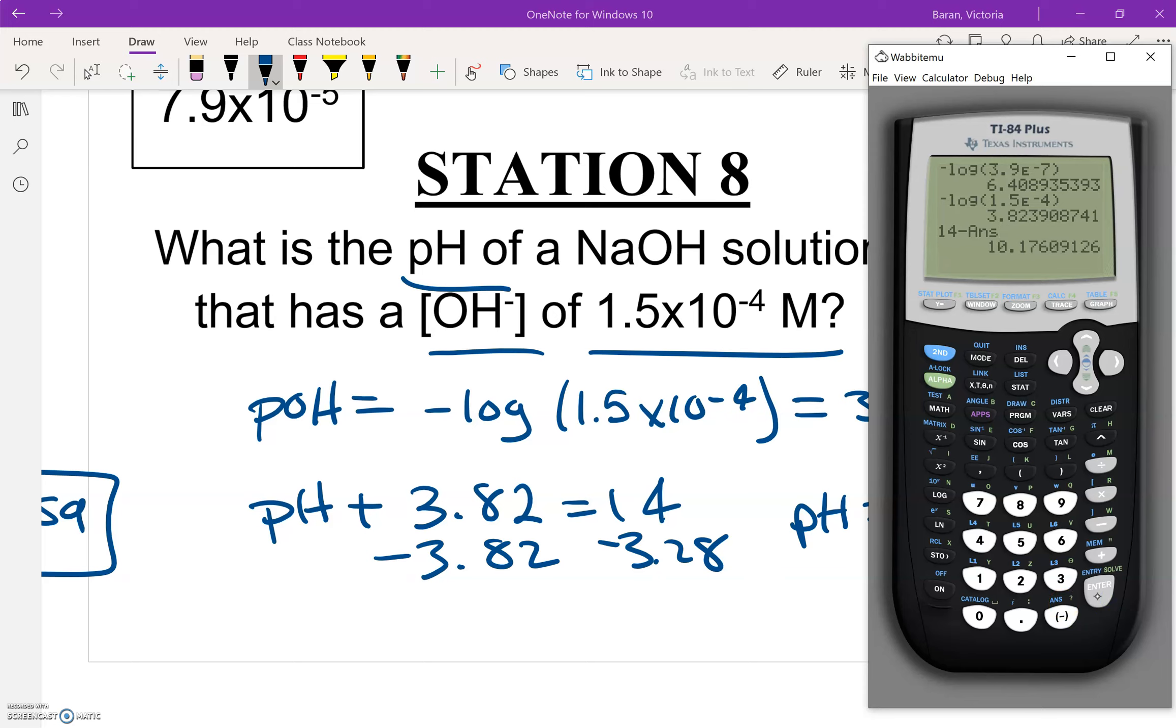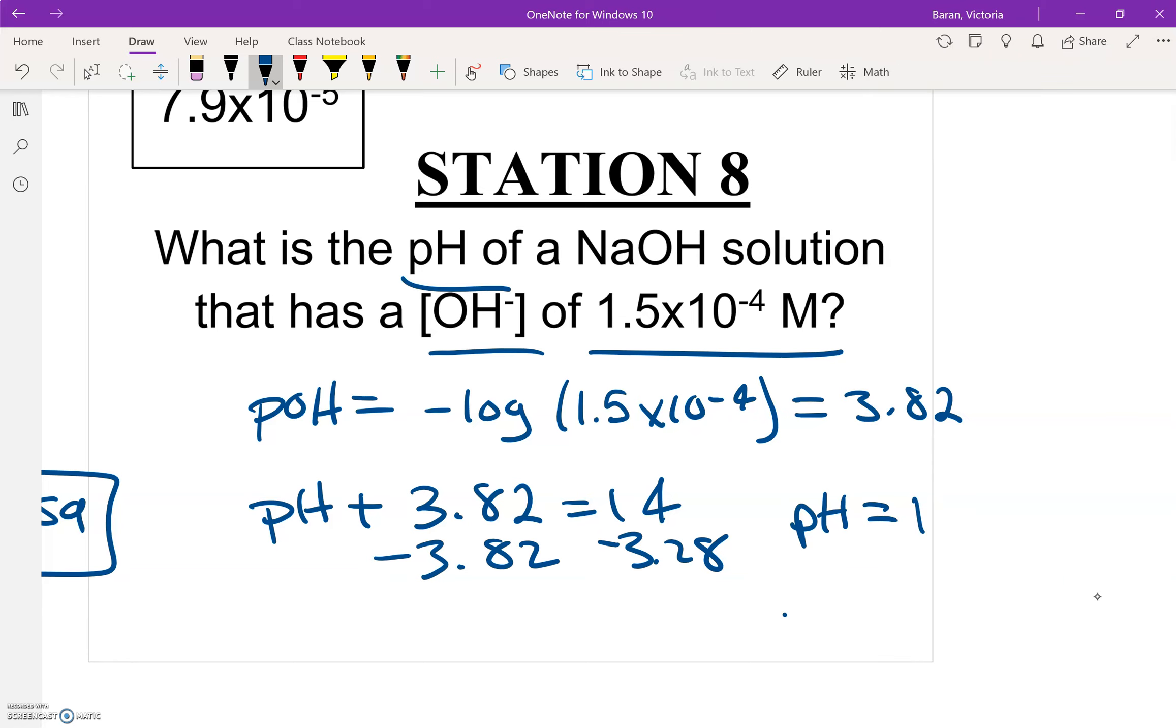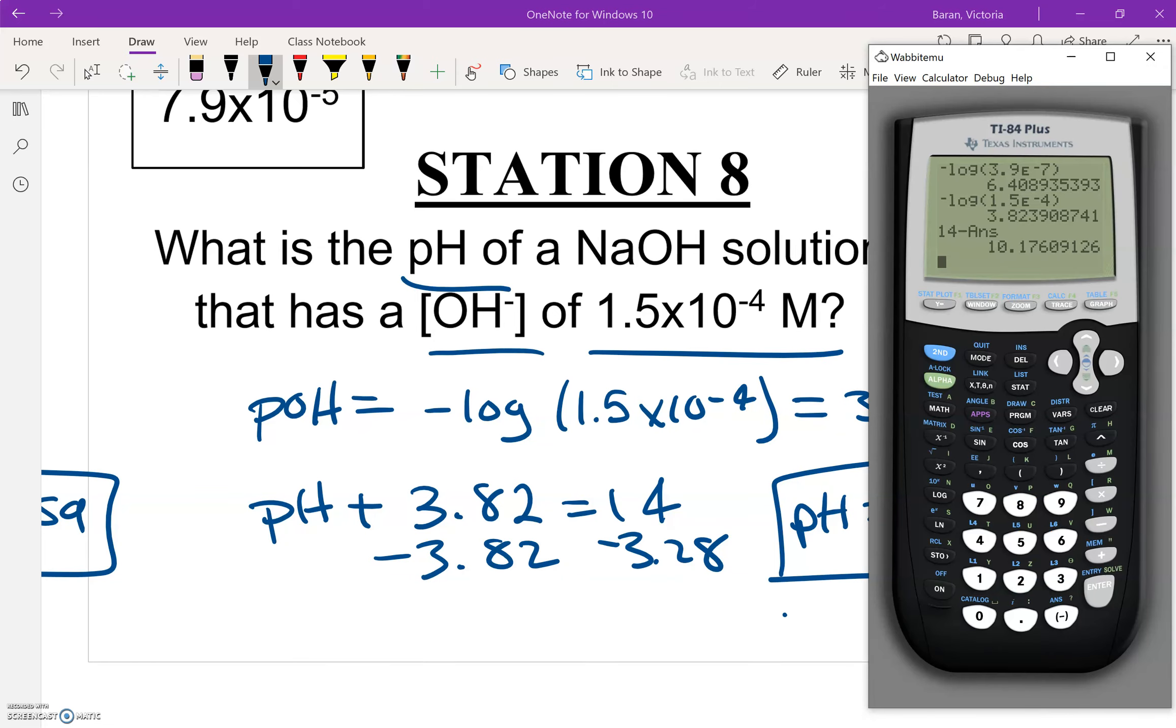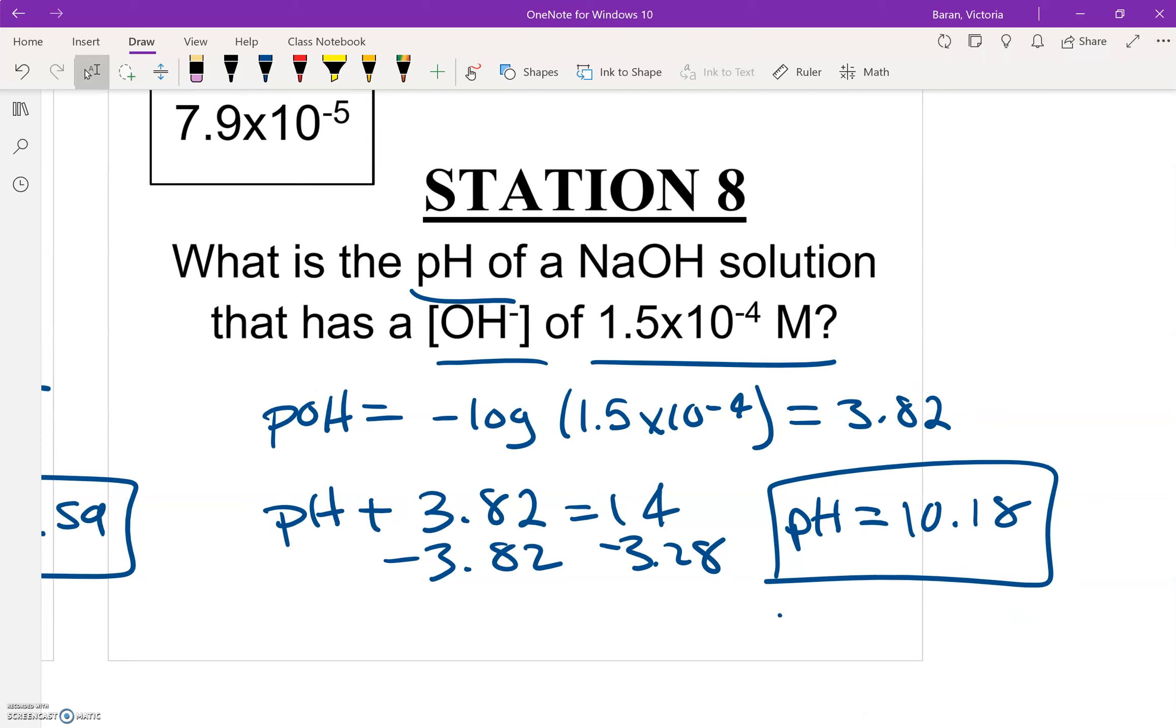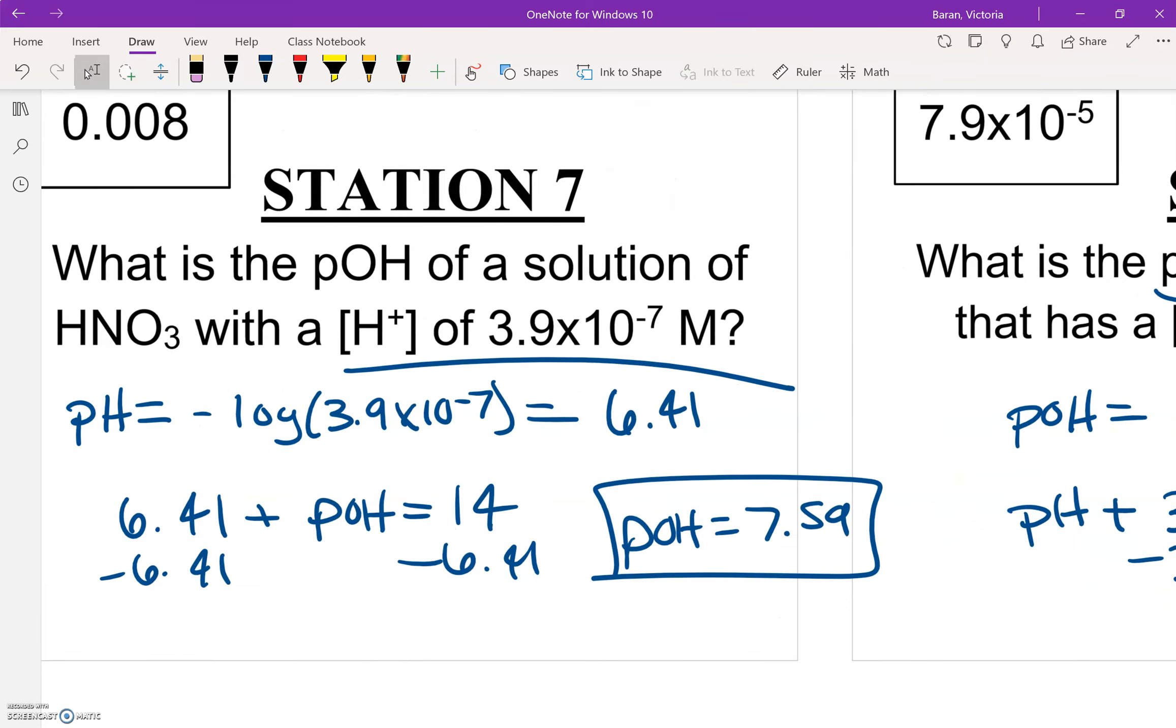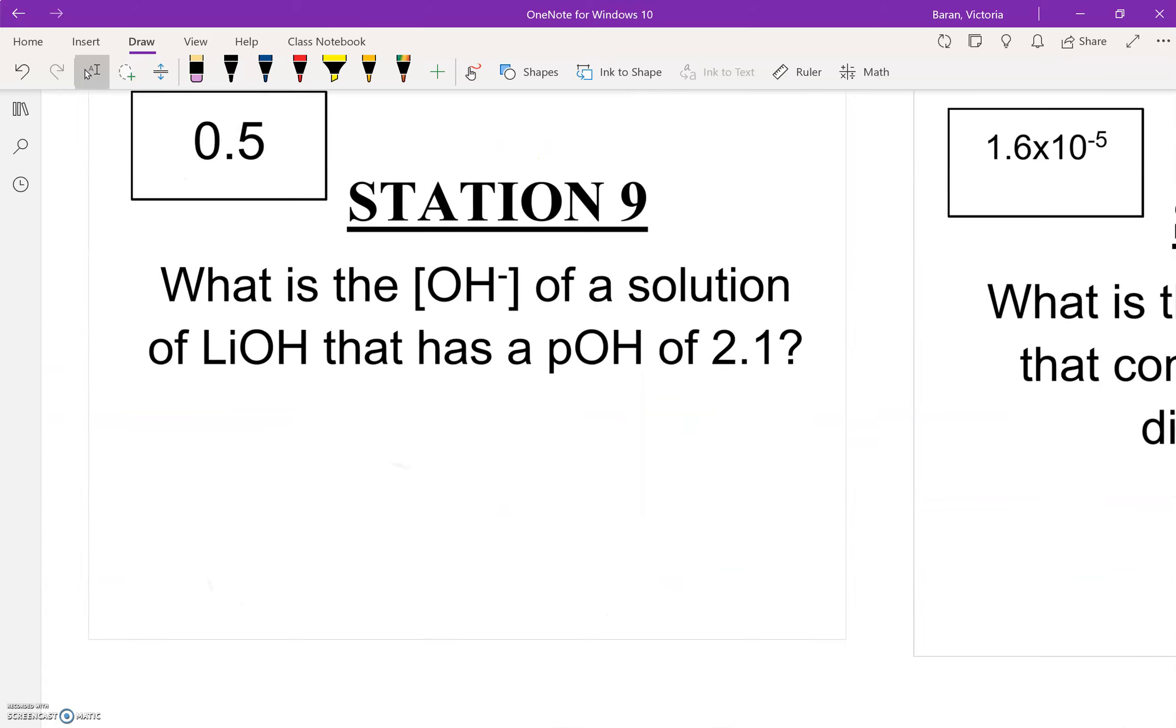So our pH is 10.18, and that's going to be our final answer. So that was an example of a multi-step problem. Now we're on to station 9.